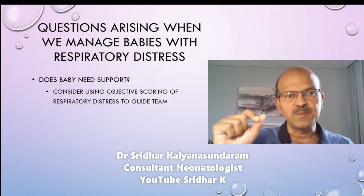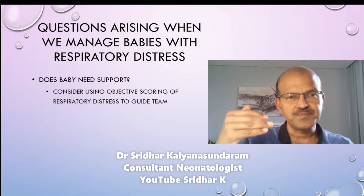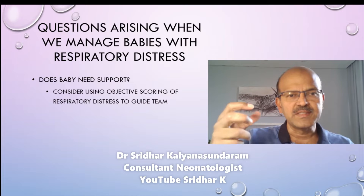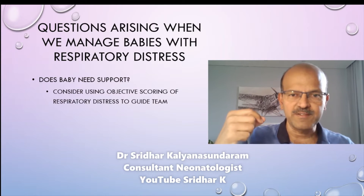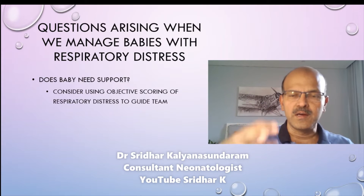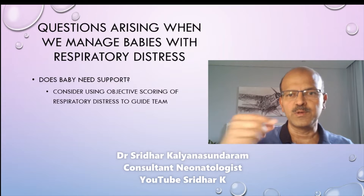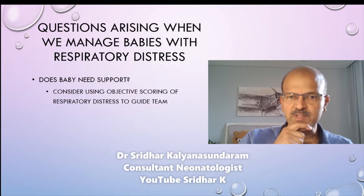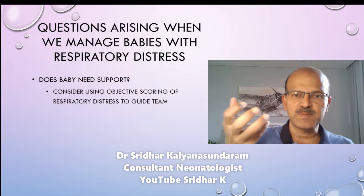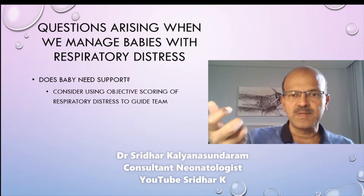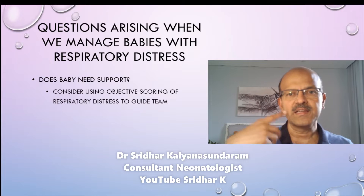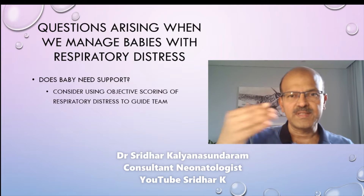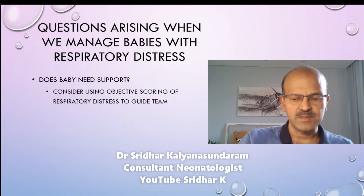Once we decide that the baby has respiratory distress, we look at whether the baby needs additional support. Objective scoring helps in this decision-making — we have the Downes score and the Silverman score. The definition of respiratory distress is the presence of visible distress in the form of increased respiratory rate or tachypnea, increased work of breathing with subcostal and intercostal retractions, and grunting may or may not be present. Monitoring may also show difficulty in oxygenation.